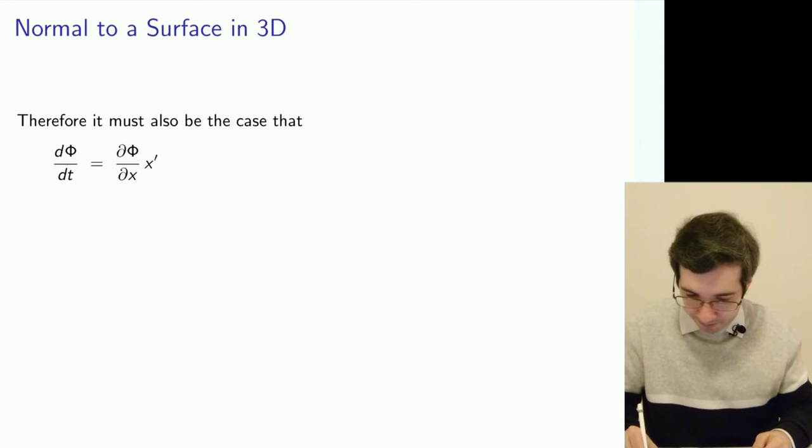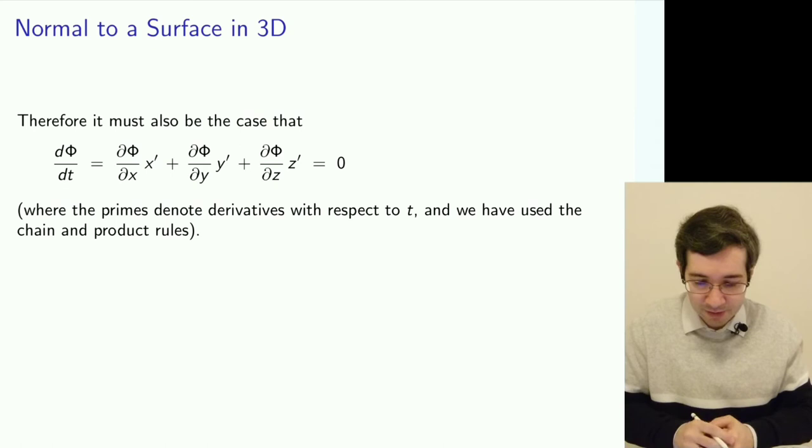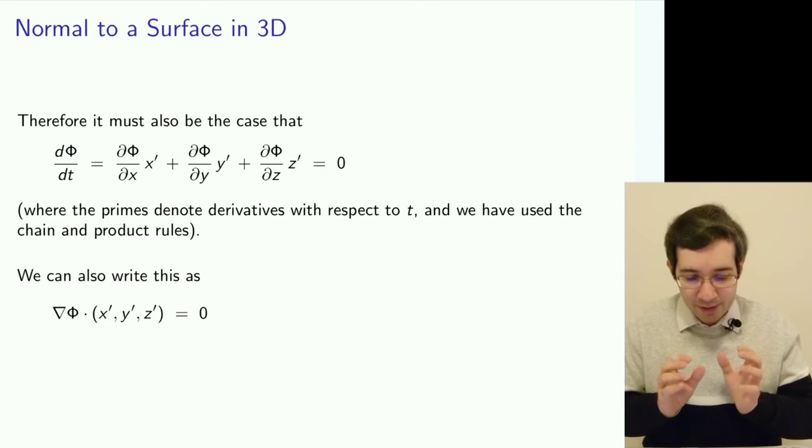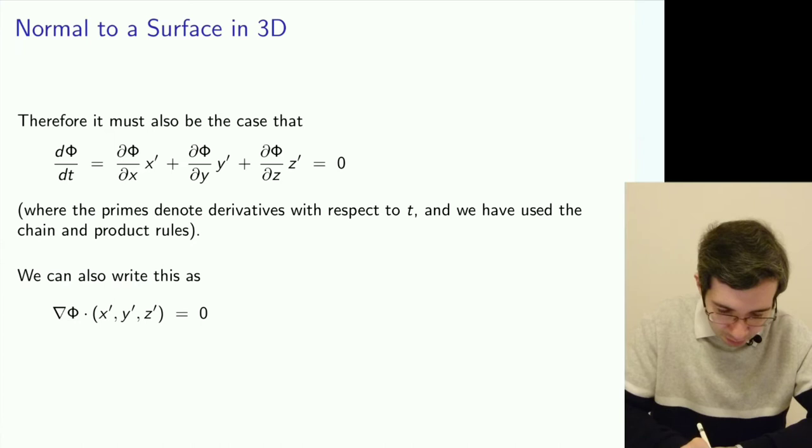And that will still be zero because if we differentiate zero, it's zero. And primes are derivatives with respect to time. What we can do now is look carefully at that expression and say it looks like a scalar product of the gradient of that scalar field and a vector composed of the time derivatives of x, y, and z.